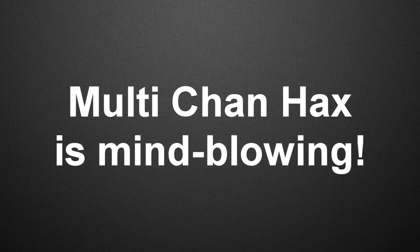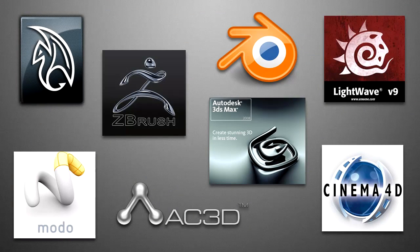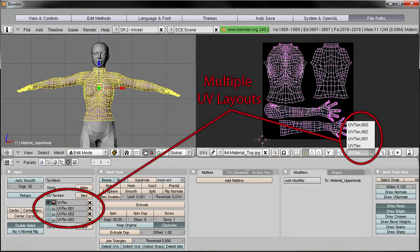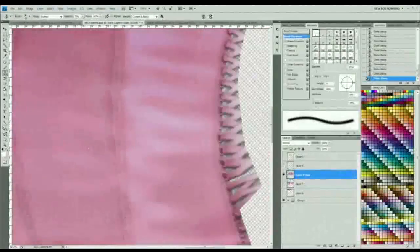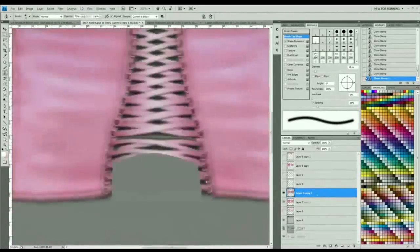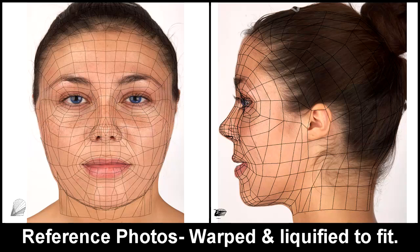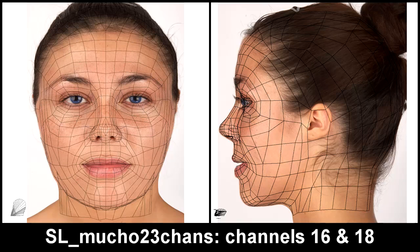But this little-known tool is mind-blowing. To quote the maker: a mapping channel is basically UV data — it's how a 2D texture gets translated onto the geometry of a 3D model. If you have access to one of the more fully featured 3D software packages, chances are good it supports multiple mapping channels or UV layouts. Don't like the way something's mapped? Remap it in another channel. Seams getting you down? Remap the seams in another channel. What Multi-Chan Hacks does is give Photoshop the ability to translate a texture to and from any single combination of the channels.